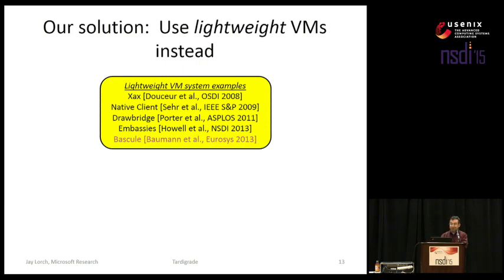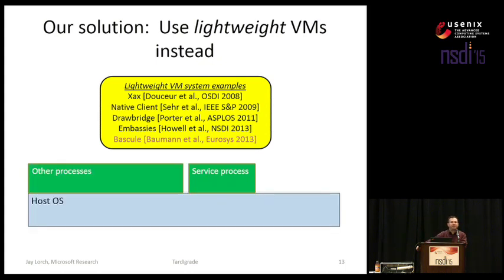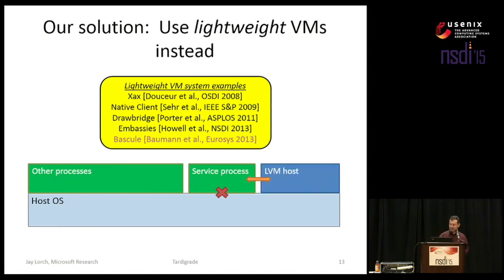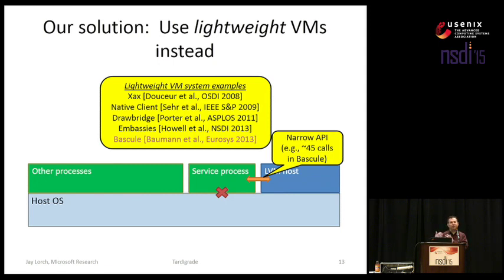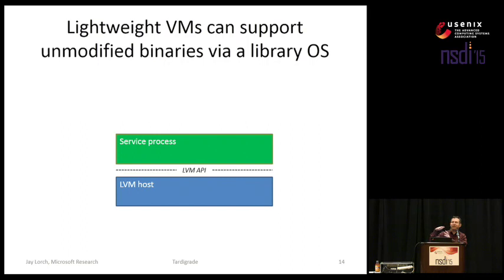So what is an LVM? It is essentially a process that runs your service. Like all other processes, it's running on a host operating system, but unlike most processes, the lightweight virtual machine system blocks its ability to make system calls to the OS. It has to rely on communicating with an LVM host — sometimes known as a reference monitor — via a narrow API. In Bascule that's 45 system calls, allowing it to get primitive OS abstractions like memory allocation, threads, synchronization primitives, and the like. The service process is essentially running on top of the host, separated by this narrow LVM API.